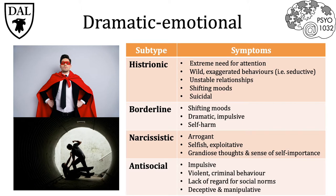The second subtype is borderline personality disorder — an individual with out-of-control emotions as well as an extreme fear of being abandoned by others. Because of this, these people will often oscillate between idolizing and despising people who they're close with. The third subtype is narcissistic personality disorder, which describes an individual who has an extremely positive self-image, is extremely arrogant, and has exaggerated self-centered thoughts and ideas.